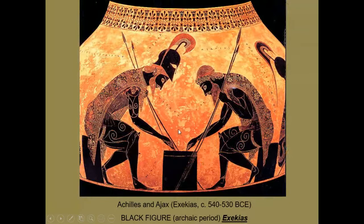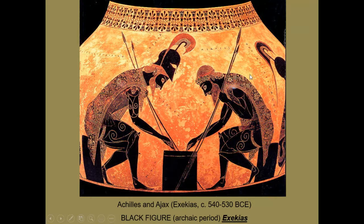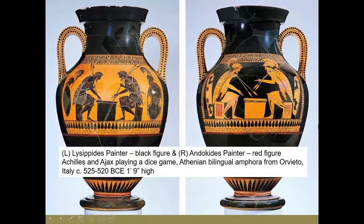In this dice game scene, Achilles and Ajax are clearly speaking to one another, and Achilles has rolled the higher number. You can see the incredibly intricate pattern in their garments. Just try to imagine that both the clay color and the painted area were red before firing — trying to distinguish where to incise those lines would be a remarkable accomplishment. We also start to see more naturalism in the body — the figures do not have their torsos turned toward us; everything is in profile view, though the eyes still face forward.